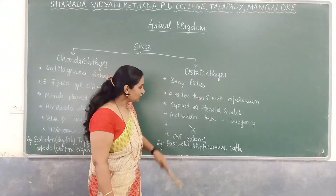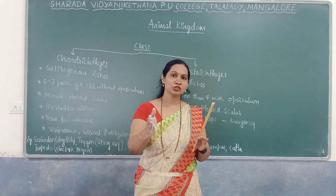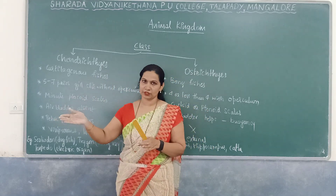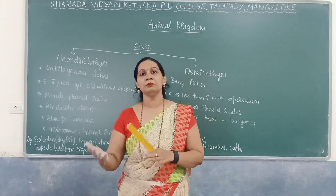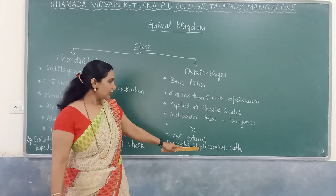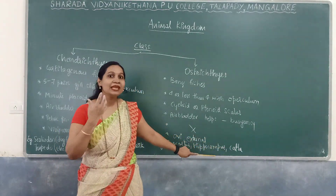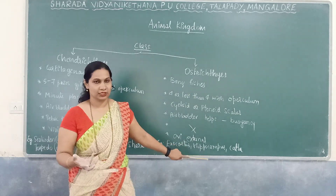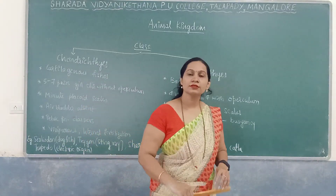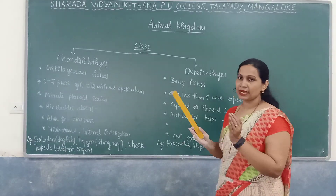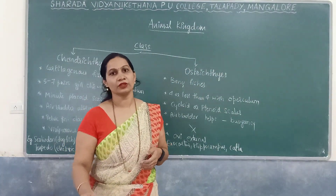In Osteichthyes, examples include flying fish (Exocoetus). We can divide them into marine fishes, freshwater fishes, and aquarium fishes. Aquarium fishes include angel fish (Pterophyllum), fighting fish (Betta), and Hippocampus — the seahorse, notable because males are involved in nursing the young. Freshwater fish examples include Catla. Based on these concepts, direct exam questions can be asked about the examples.